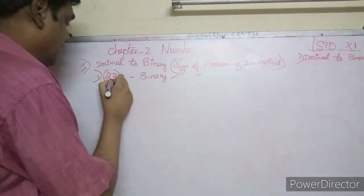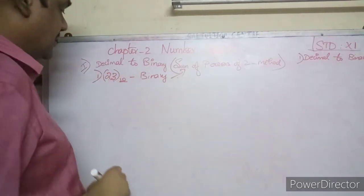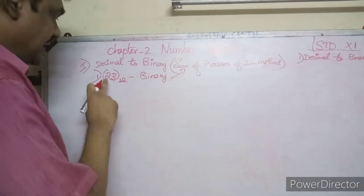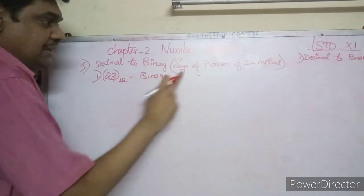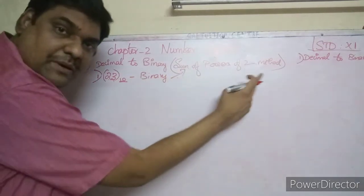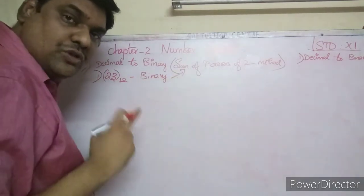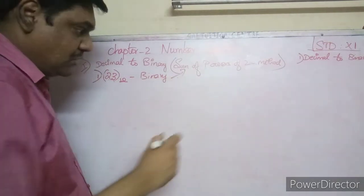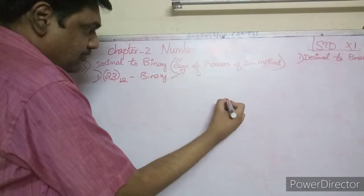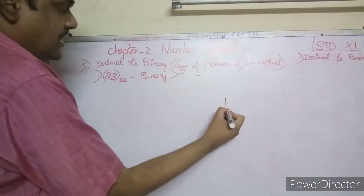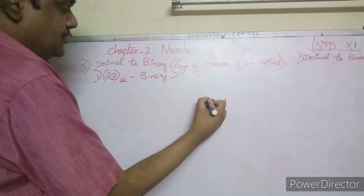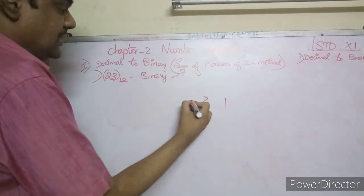Now let's try another example: 23 base 10 to binary.